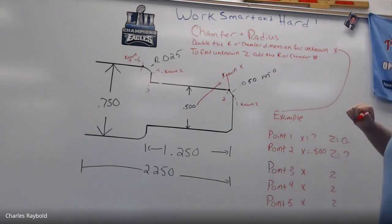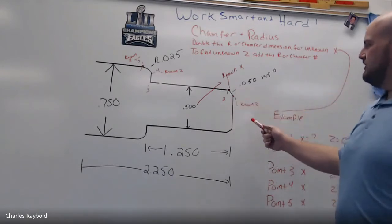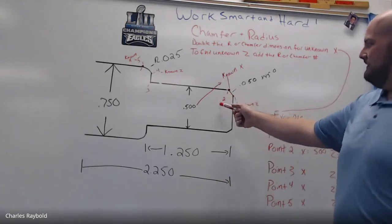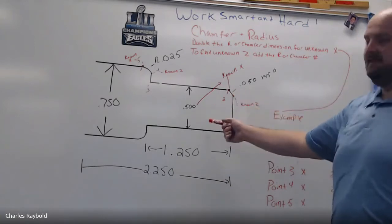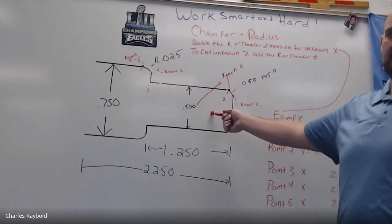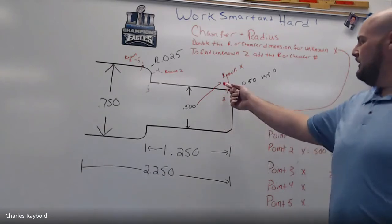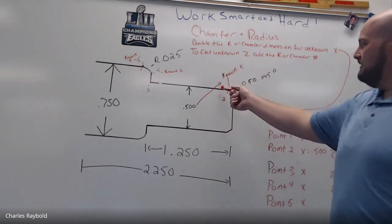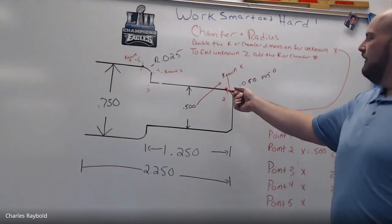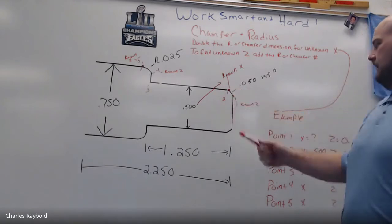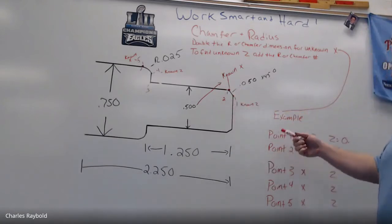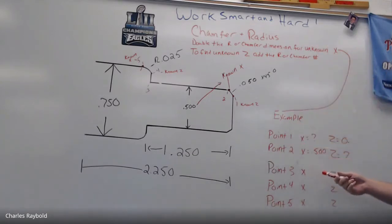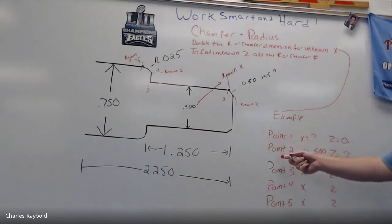So which is the unknown X for this one here? I know where it ends. I know that the chamfer ends at point five. So when I look here, I know my known X is point five. And when I look down here, here's an example that we're going to do.